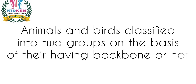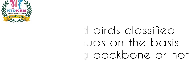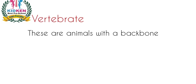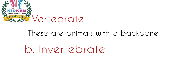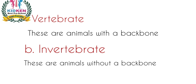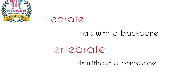Animals and birds are classified into two groups on the basis of their having a backbone or not having one. Vertebrates are animals with a backbone. Invertebrates are animals without a backbone. In your book, you will see a flow chart in which animals, vertebrates and invertebrates, are divided.